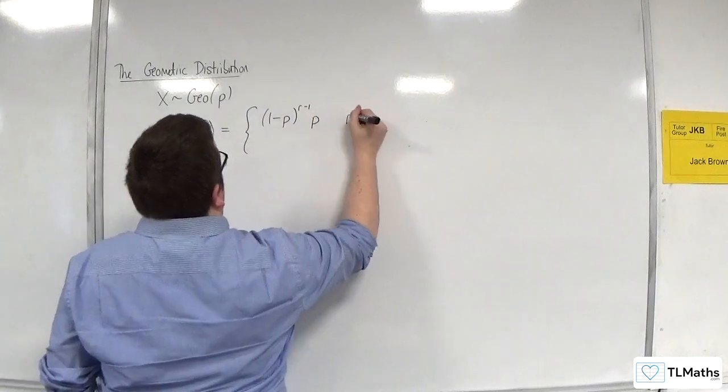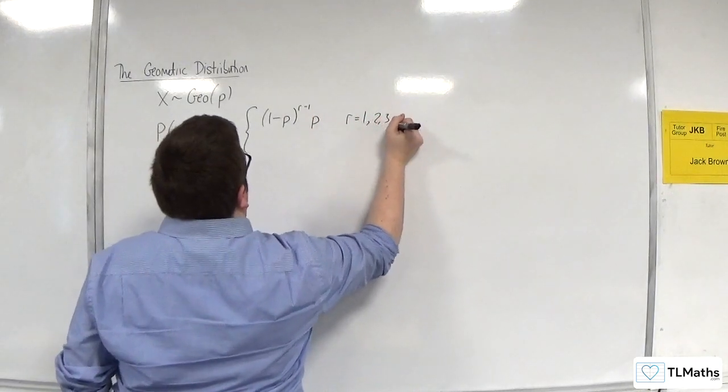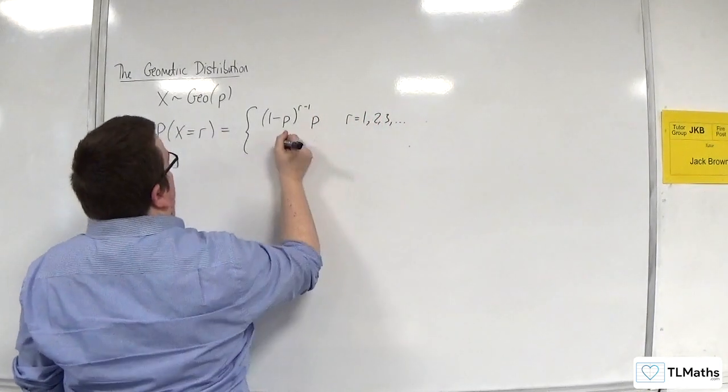minus 1 times P, where R is 1, 2, 3, etc. And 0 otherwise.